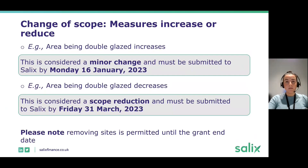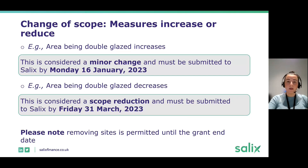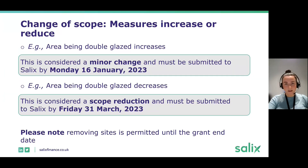If existing measures increase in scope — for example, if the area of windows being double-glazed increases — that's a minor change and can be submitted by Monday the 16th of January. We'll need to reassess it so we're aware of any changes to gas savings, and those changes can be authorised at this stage of the project.